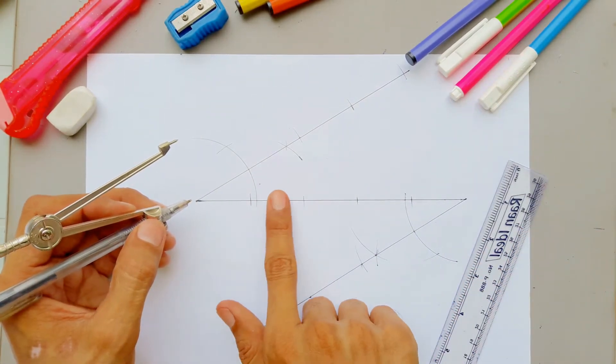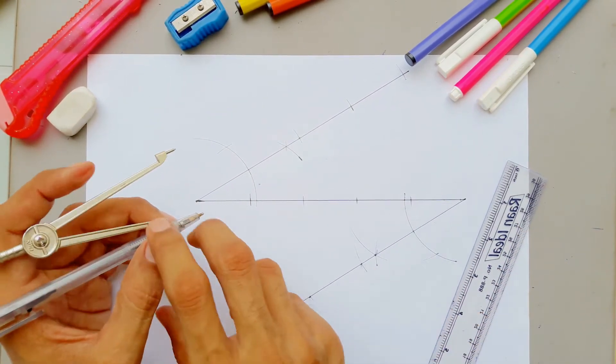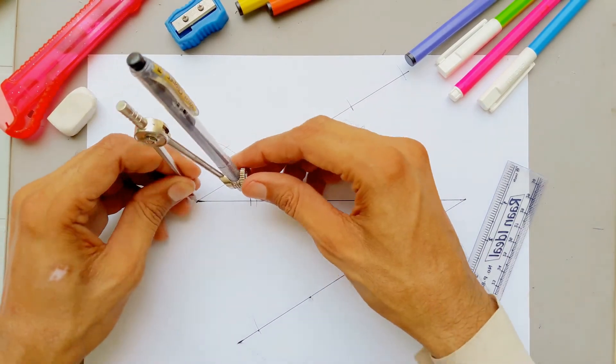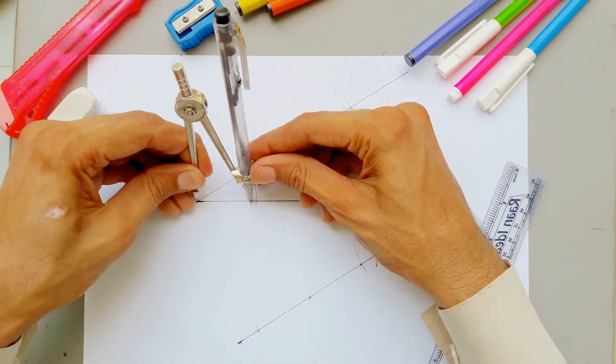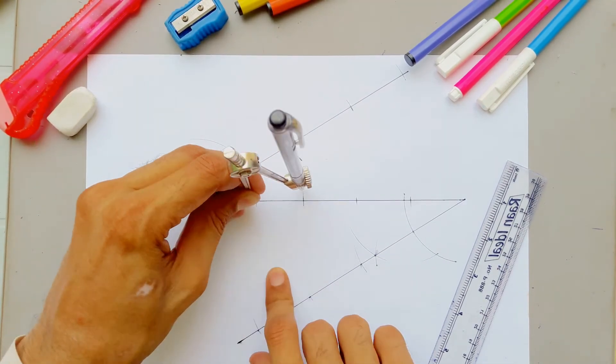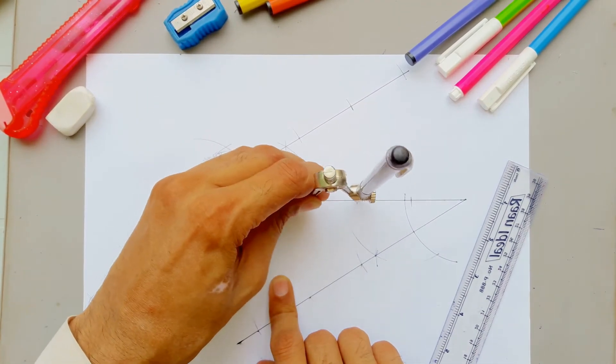We've marked all the points. Now it's time to check the accuracy. Ok. All the segments are equal.